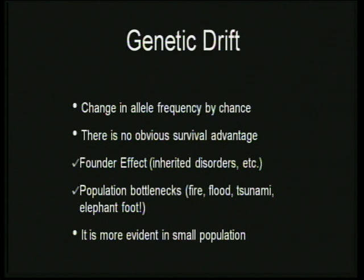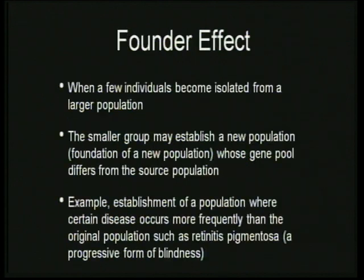There are two ways to demonstrate genetic drift: founder effect and population bottleneck. These are the typical examples used when discussing genetic drift. Importantly, genetic drift is more evident in small populations, which we will demonstrate shortly.